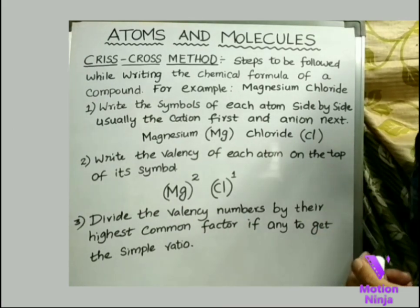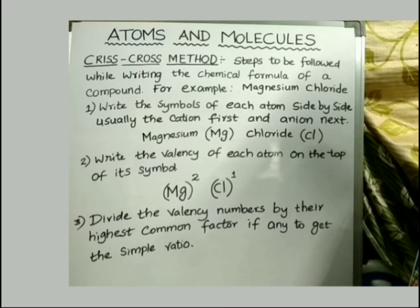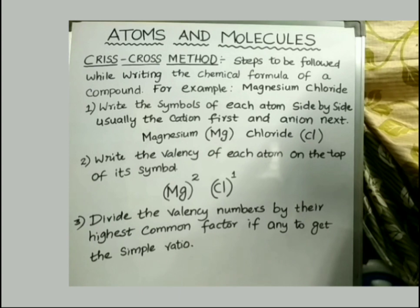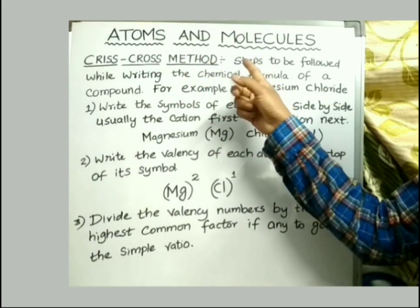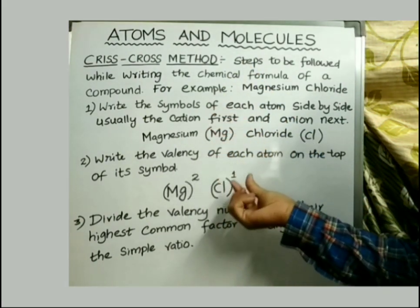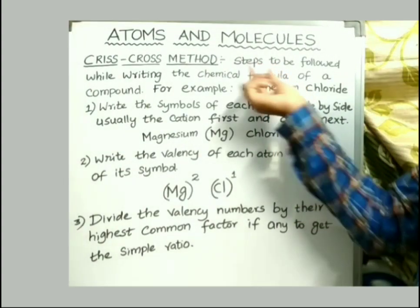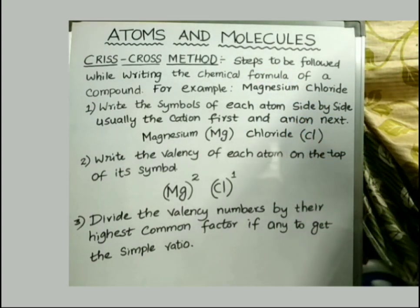For writing the molecular formula of a compound, we follow a method which is called the crisscross method. The crisscross method is very useful in writing the molecular formula of compounds, and the following are the steps which should be followed to write the molecular formula of a compound.